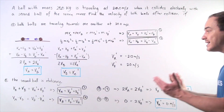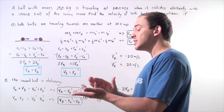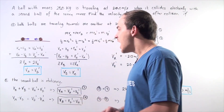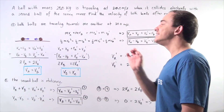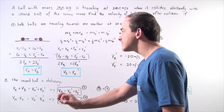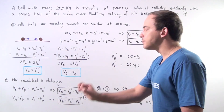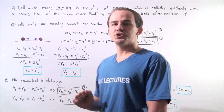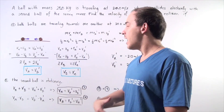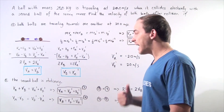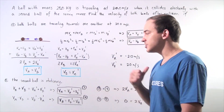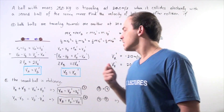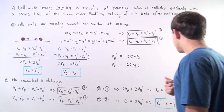So once again, because we have an elastic collision with equal masses, object A gives its entire velocity to object B. Object A, which was moving, comes to rest with a final velocity of zero, and object B, which was stationary, moves away at positive 20 meters per second.